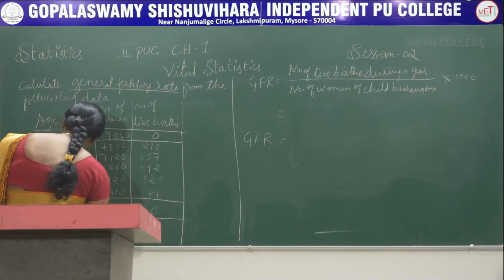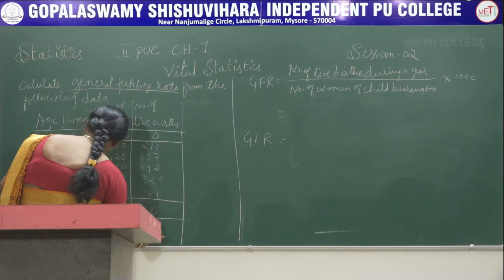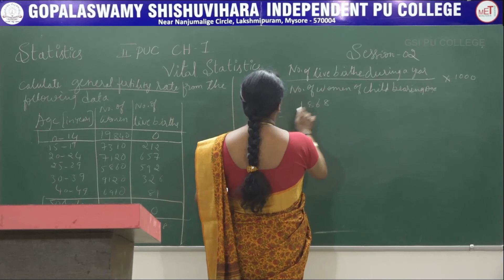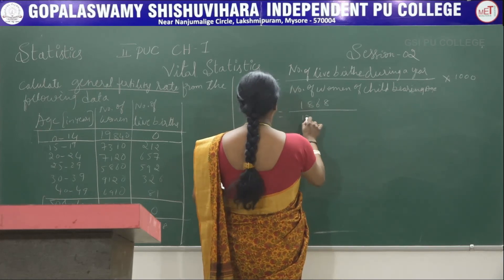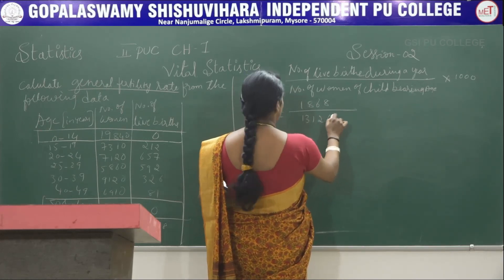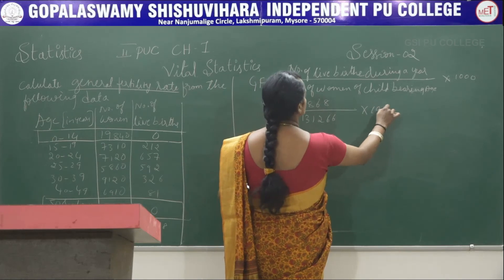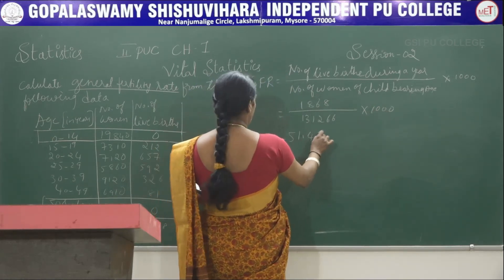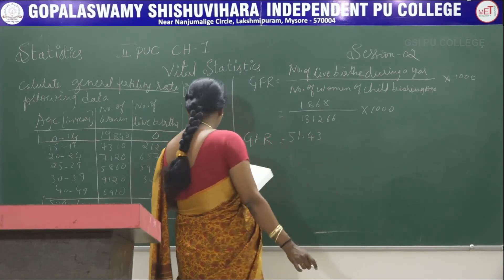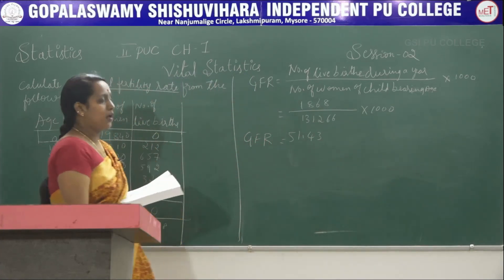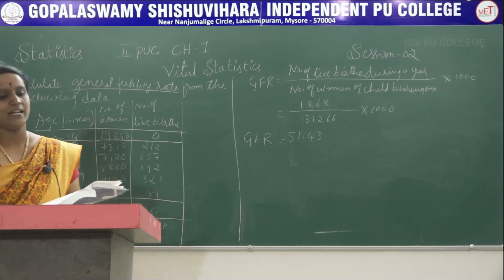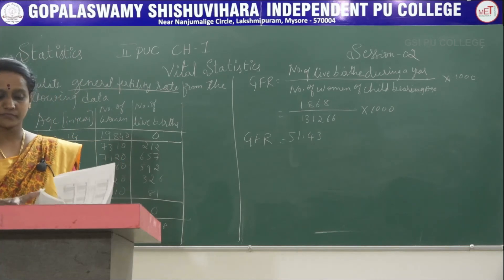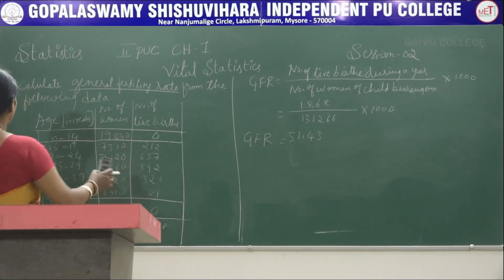After leaving out those two age groups, the total women population is 36,320 and total number of births is 1,868. Substituting: 1,868 divided by 36,320 multiplied by 1000. The GFR is 51.43 births per 1000 women of childbearing age.